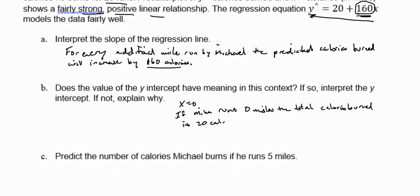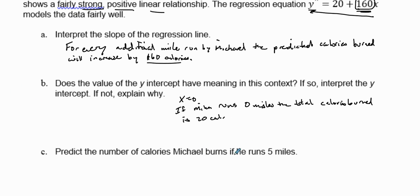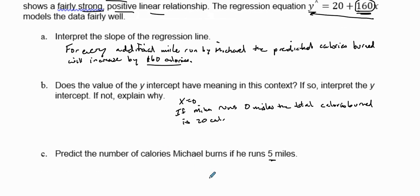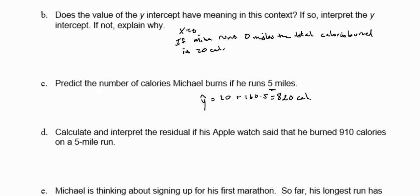Next, we're going to predict the number of calories burned if he runs five miles. In order to figure out the predicted value, we're going to take 20 plus 160 times 5. So if you put this in your calculator, 160 times 5 plus 20, he's going to probably burn according to this model 820 calories. That's our predicted amount.